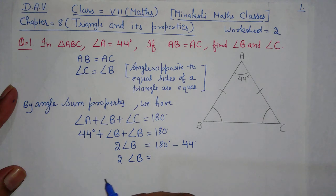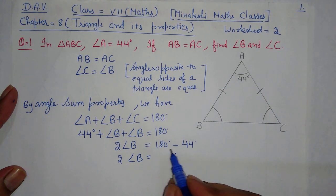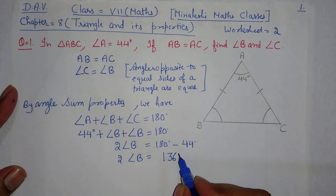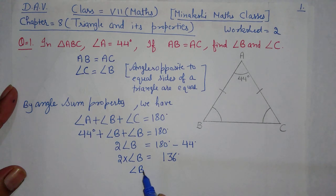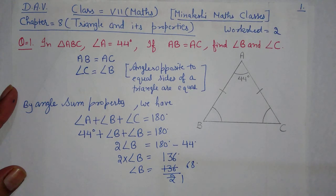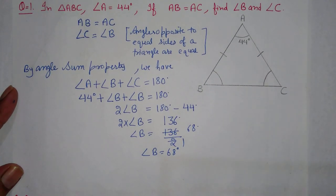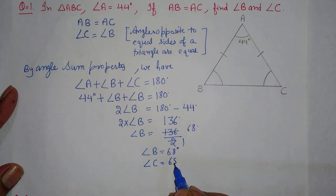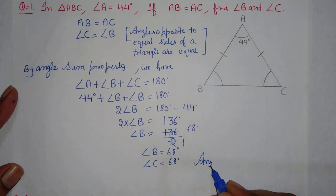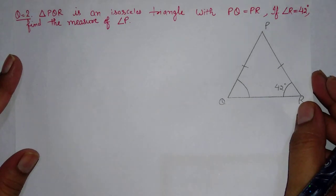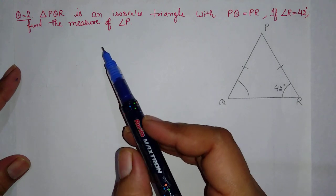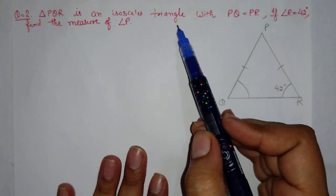Since angle B is equal to angle C, wherever angle C is written, we can write B instead. Both are equal, so we can write angle B in place of angle C.